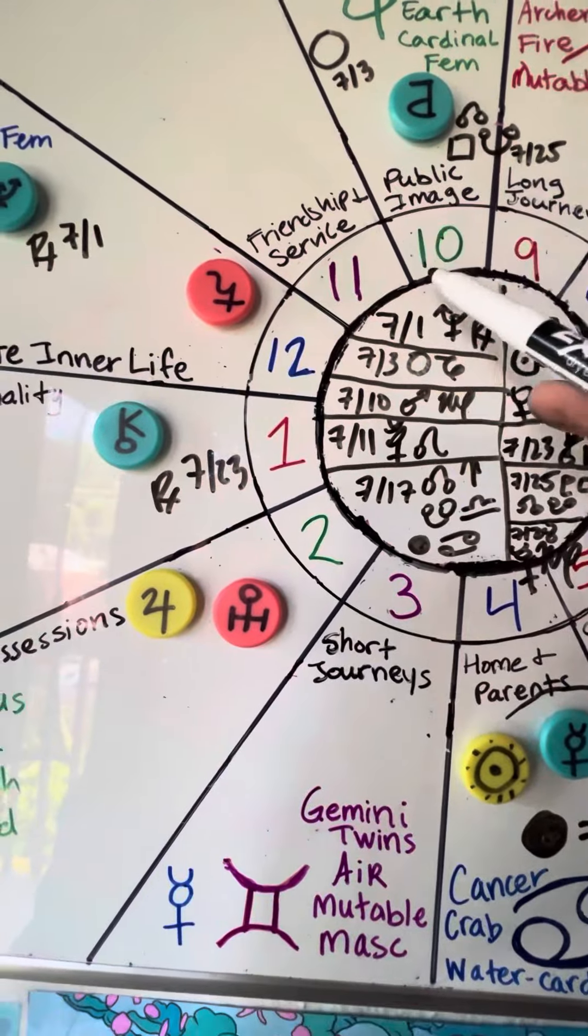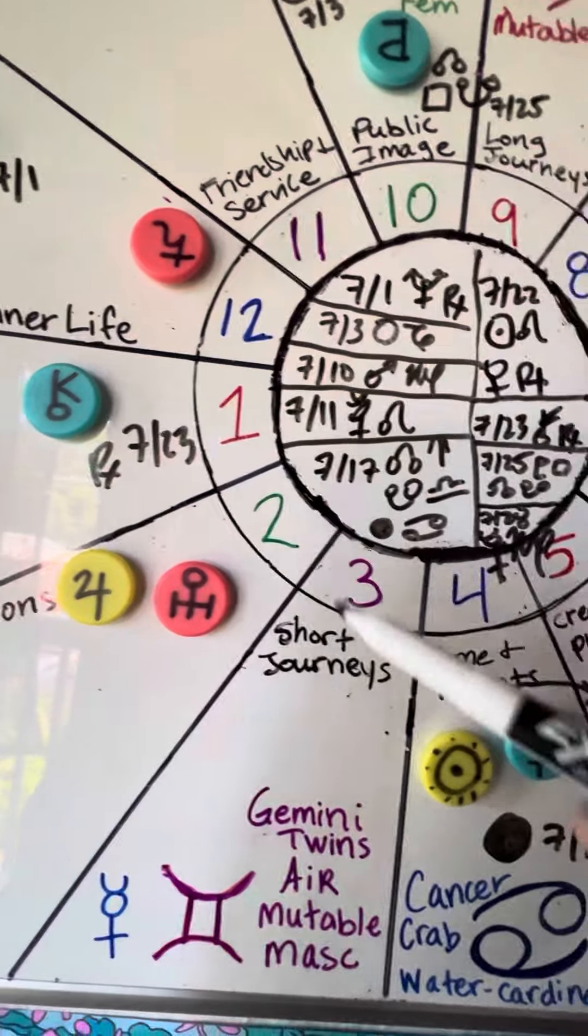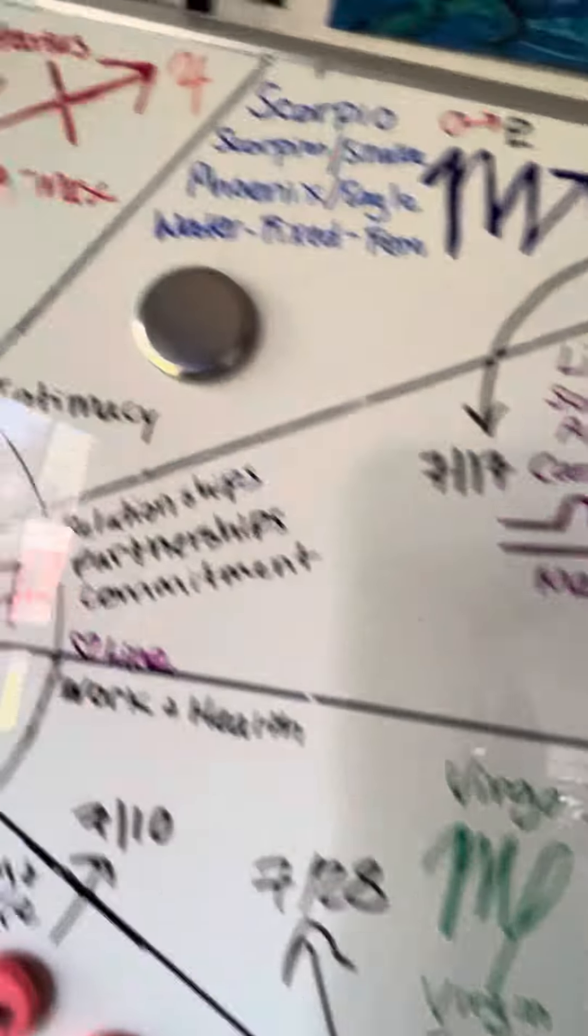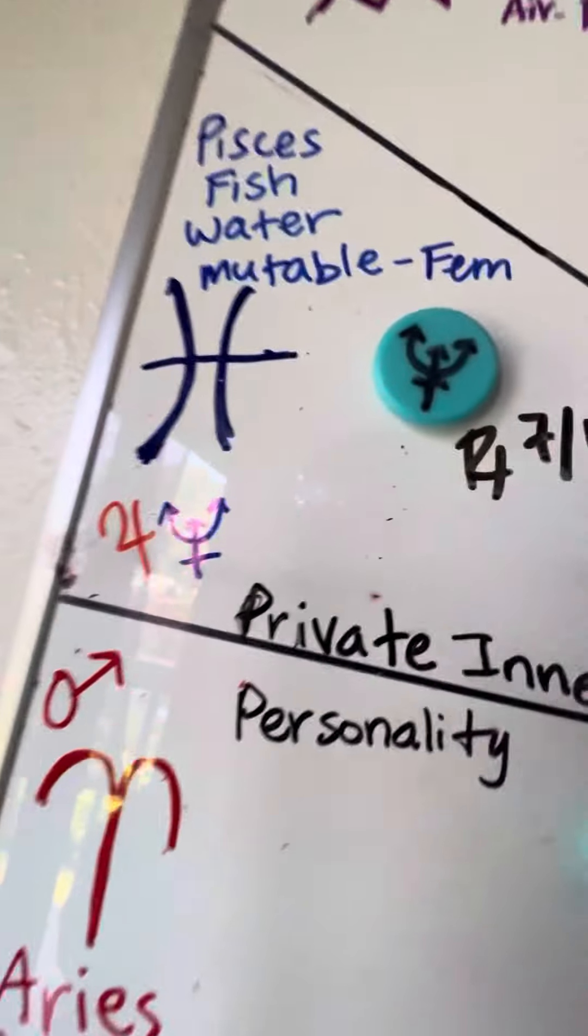And then I did these lines 30 degrees apart to get the lines for the houses. So there's 12 houses, starts with Aries, goes around in order, ending with Pisces.